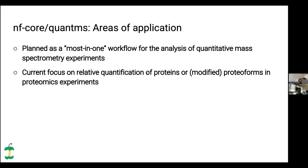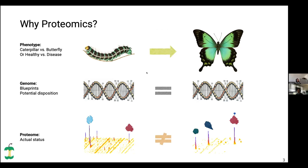It is planned as a most-in-one workflow for the analysis of quantitative mass spectrometry experiments in general. That can mean metabolomics, proteomics, or proteogenomics, but the current focus is relative quantification of proteins or modified protein forms based on mass spectrometry experiments. I'll first ask: why do people do proteomics and how is it different from the usual genomics we see in NFCore?